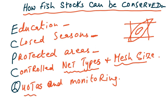Then quotas and monitoring: quotas are fixed for different countries specifying how much fish they can catch, and a monitoring system ensures compliance. This is somewhat difficult because every government has its own rules. The quotas and monitoring system must be very legally followed so that it helps in conserving fish stocks.